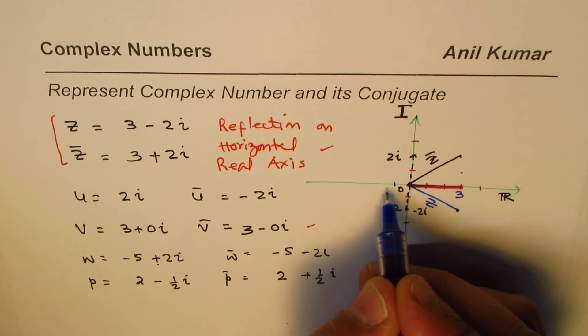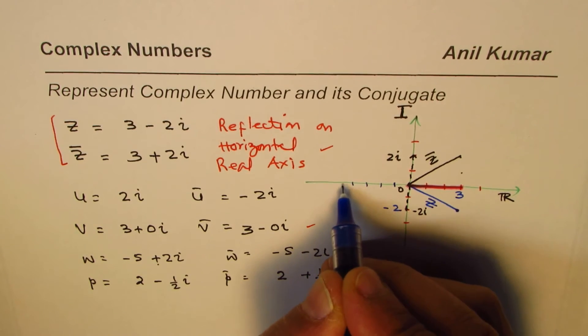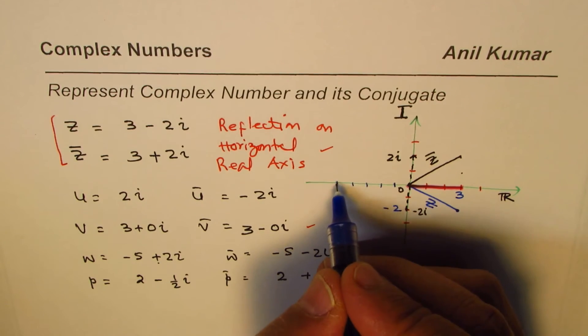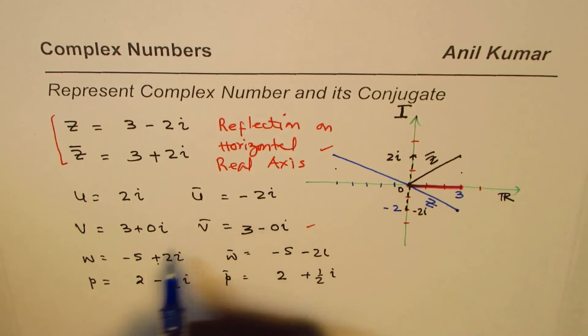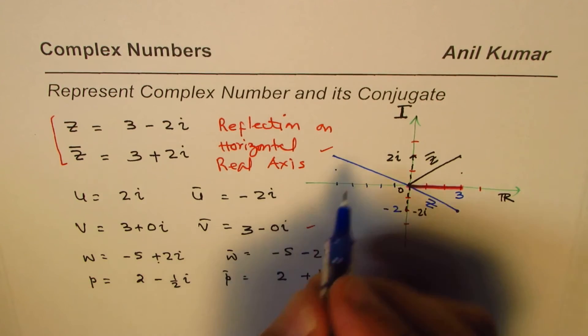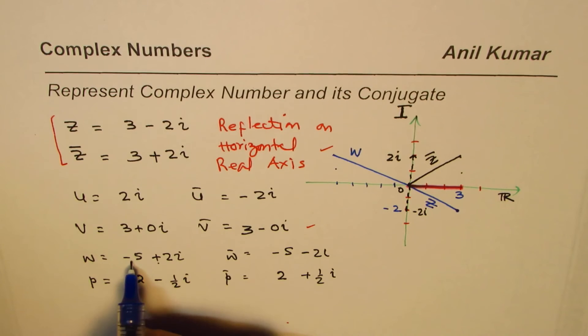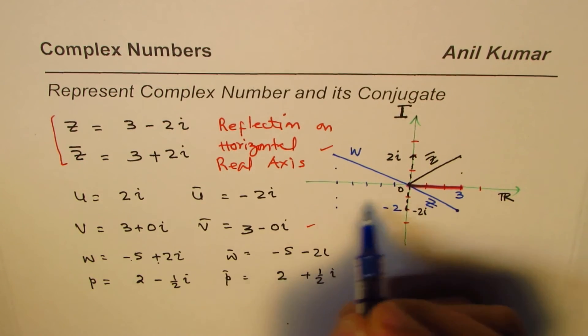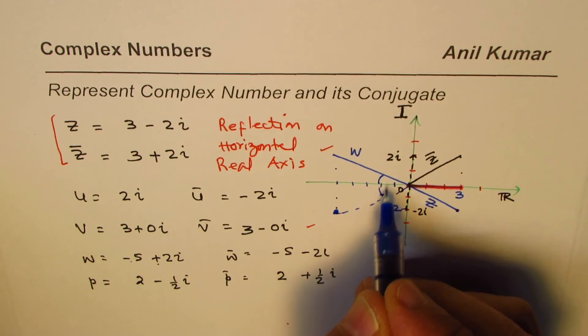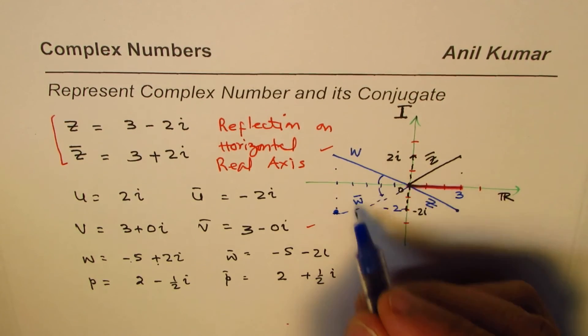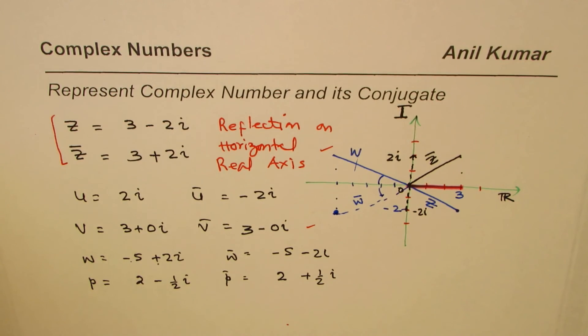Represent them on the plane and then check with my solution. For w = -5 + 2i: we go 5 units to the left (1, 2, 3, 4, 5) and 2 units up (1, 2). So that is the complex number w. Its reflection below the real axis, at -2i, represents the conjugate. It will always be reflected along the real axis to get the conjugate.